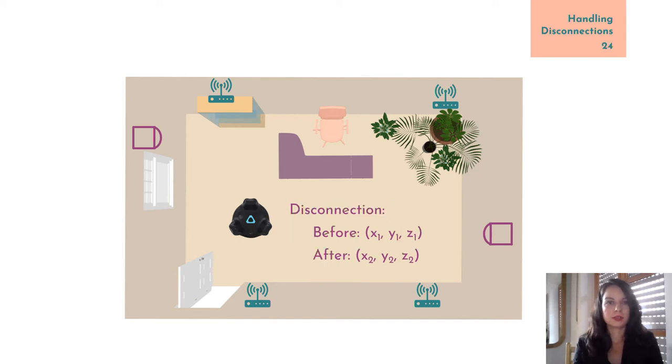Second, when the tracker loses the direct sight to all of the base stations, the locations returned before and after the disconnection will be different even if the tracker hasn't moved. We don't know for sure why the HTC Vive has this behavior since their algorithms are closed source.